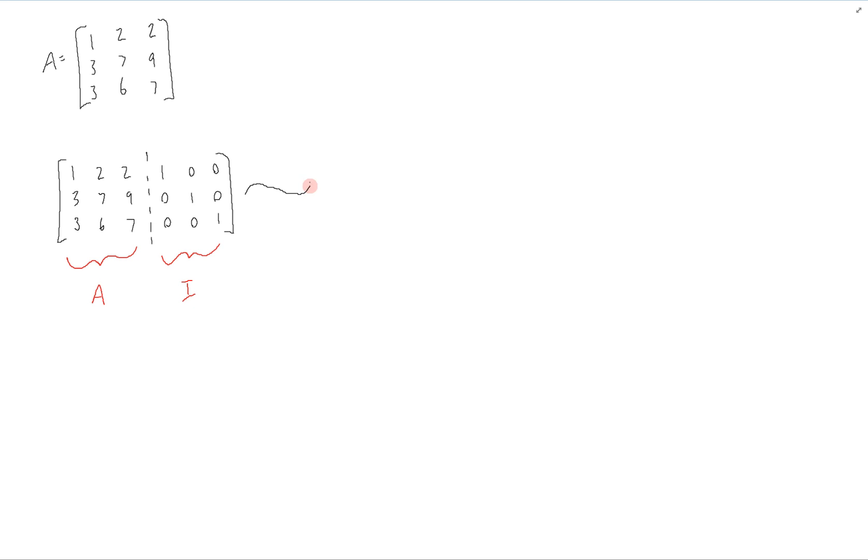To row reduce this, we're first going to perform two operations. We're going to take row two and add negative three times row one to it and replace it, and row three, and add negative three times row one to it and replace row three.